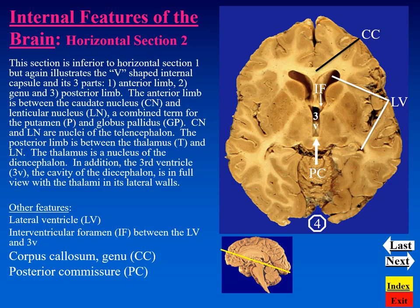Continuing with another horizontal section, which is slightly inferior or ventral to the previous section. We see that the corpus callosum, the genu region, is still in view, as well as the lateral ventricle cut in two locations. The more anterior one, which is the larger space, is going into the anterior horn, while the posterior location is that portion going into the inferior horn. In the midline, the third ventricle is in clear view, and we can see that the third ventricle is communicating with the lateral ventricle through its interventricular foramen.